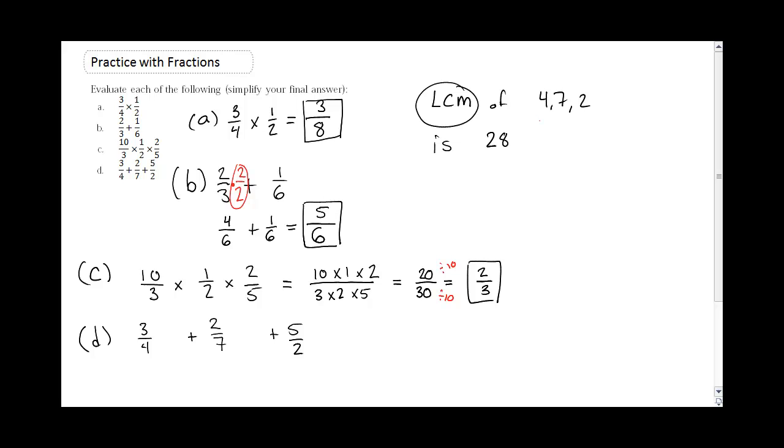So, to get to 28, I'd have to take 4 times 7. So I'd better do it on top as well. I need to take this times 4. And to get to 28, I need to take 2 times 14.